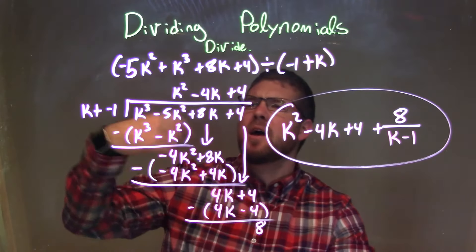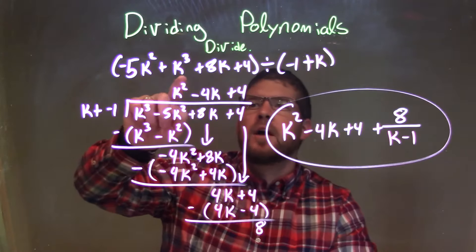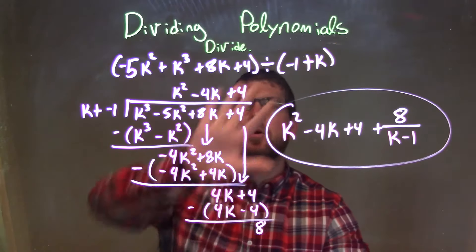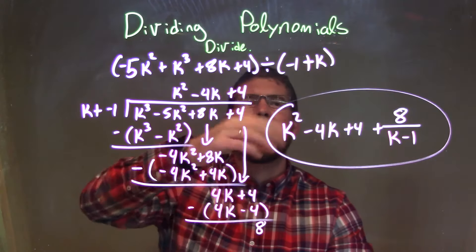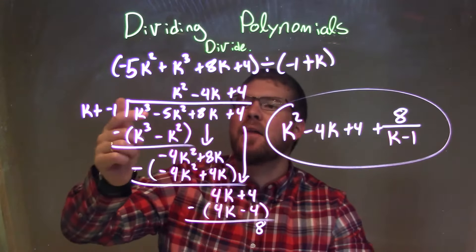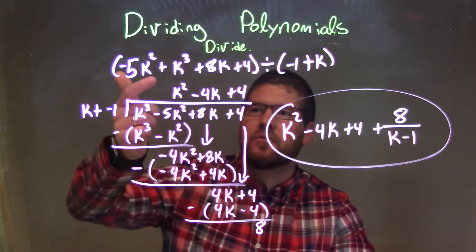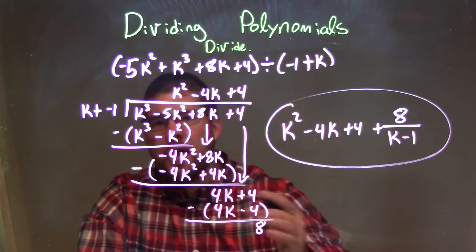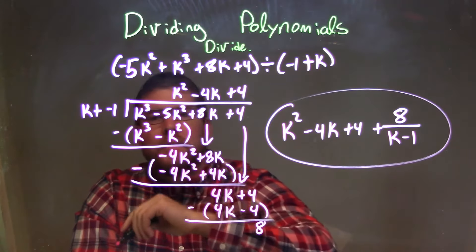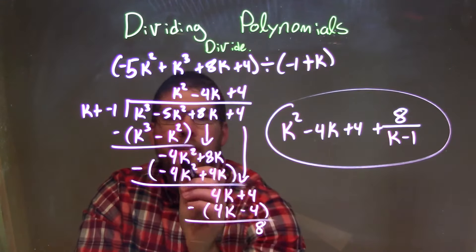Let's recap. I was given the problem: negative 5k squared plus k to the third plus 8k plus 4, divided by negative 1 plus k. I rearranged both of them when I wrote it in long division to have highest degree first — k plus a negative 1 for the divisor, and k to the third minus 5k squared plus 8k plus 4 for the dividend. Make sure you bring down all parts. Then I asked: what times k gives me k to the third? That's k squared.